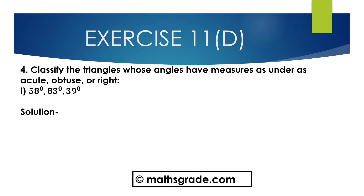Now we will solve question number 4: Classify the triangles whose angles have major edge, under edge — acute, obtuse, or right angle.